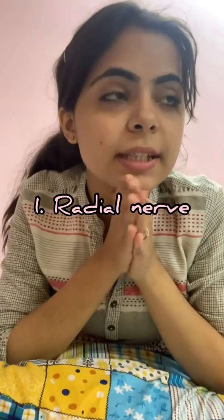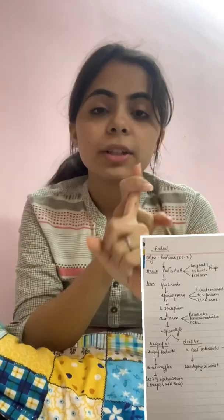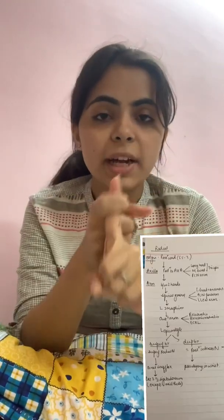First, we'll be doing the course of the radial nerve in the entire upper limb. It takes origin from the posterior part of the brachial plexus, so the root value will be C5, C6, C7, C8, and T1. From there it goes to the axilla, where it gives three branches: to the long head of the triceps,